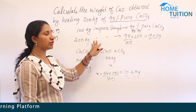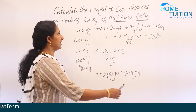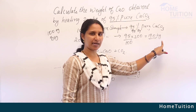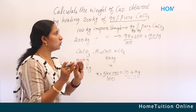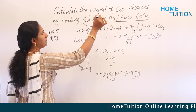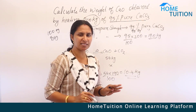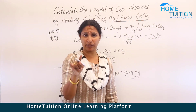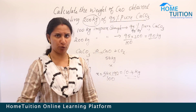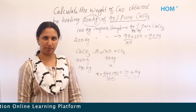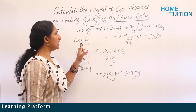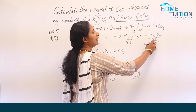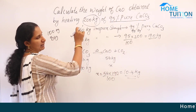So 100 kg of impure sample contains 95 kg of pure CaCO3. For 200 kg, the amount of pure calcium carbonate is 95/100 × 200 = 190 kg. Therefore 200 kg of the impure sample contains 190 kg of pure calcium carbonate, not 200 kg.